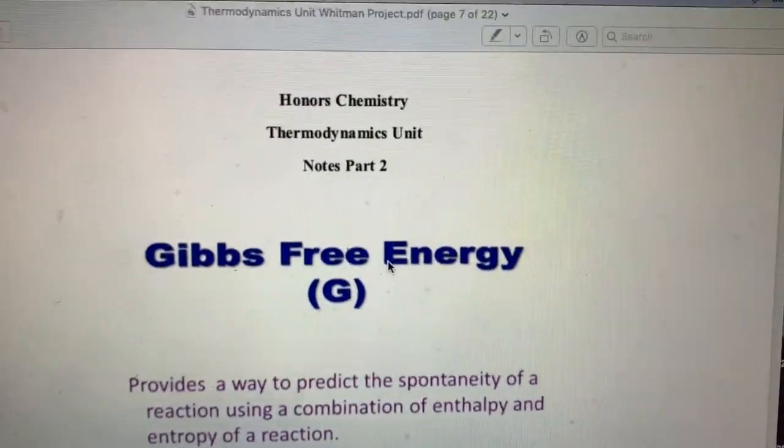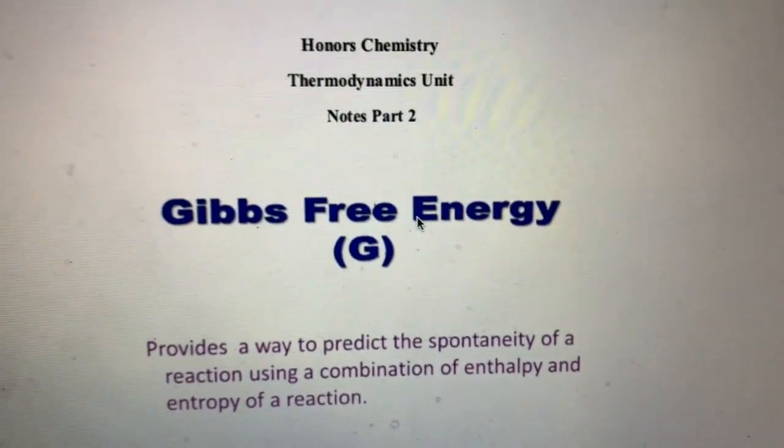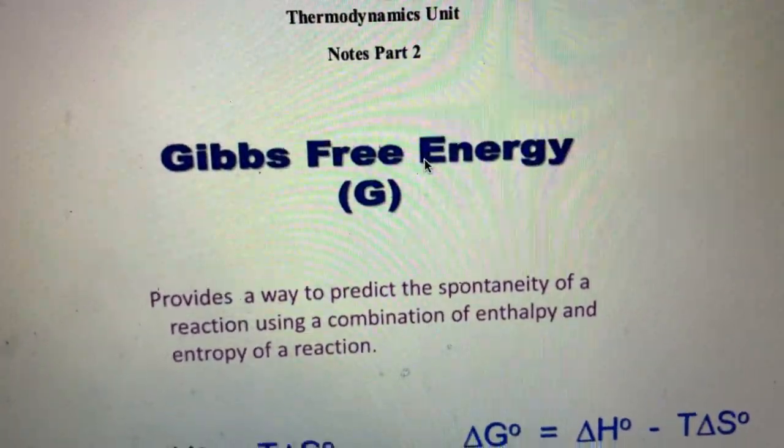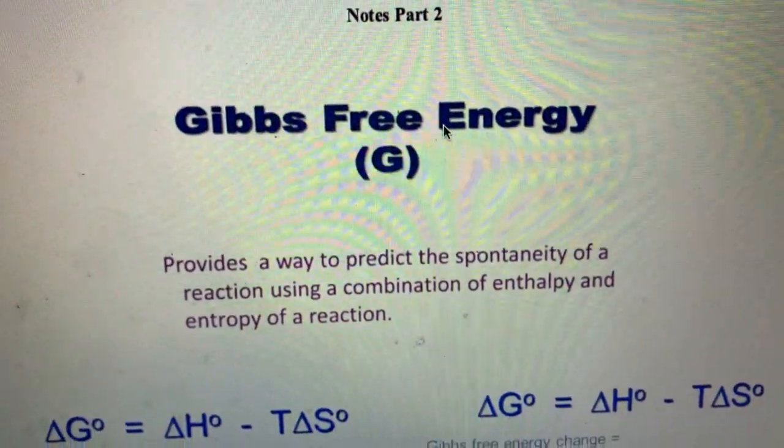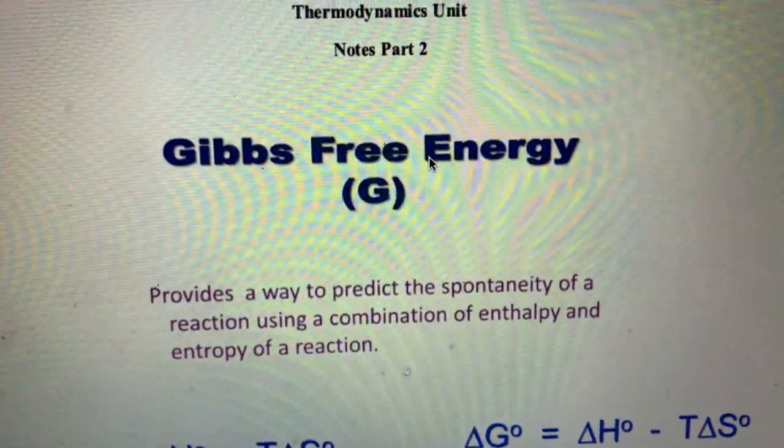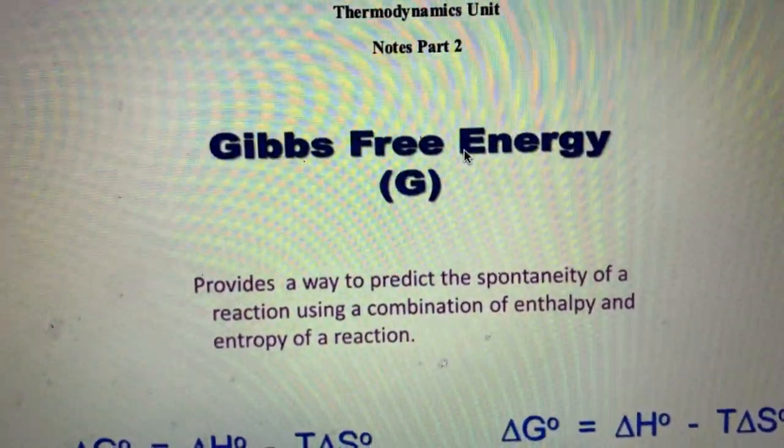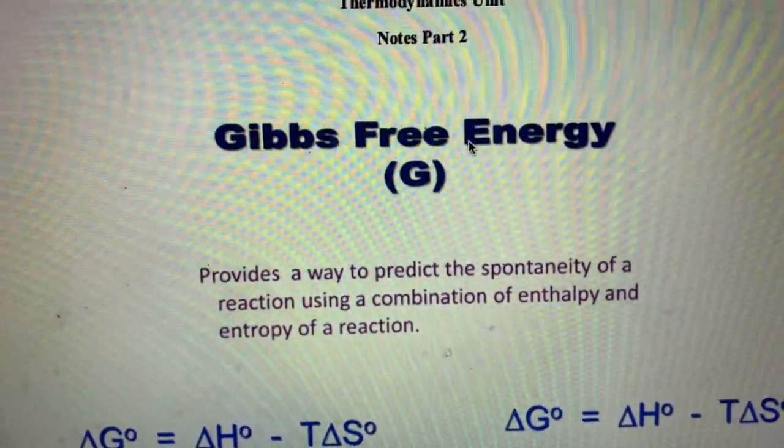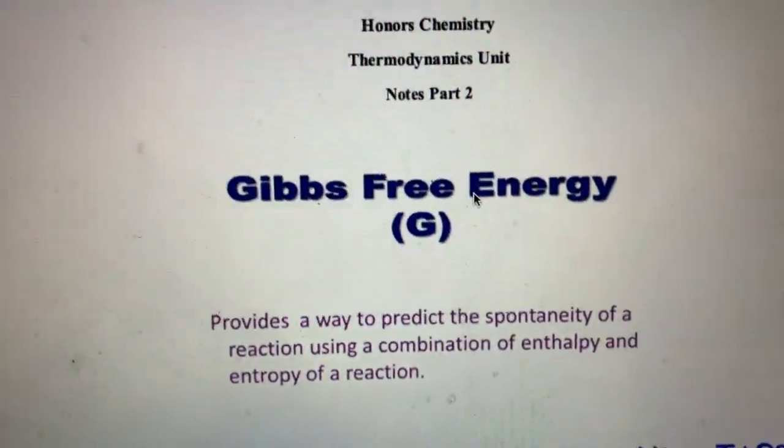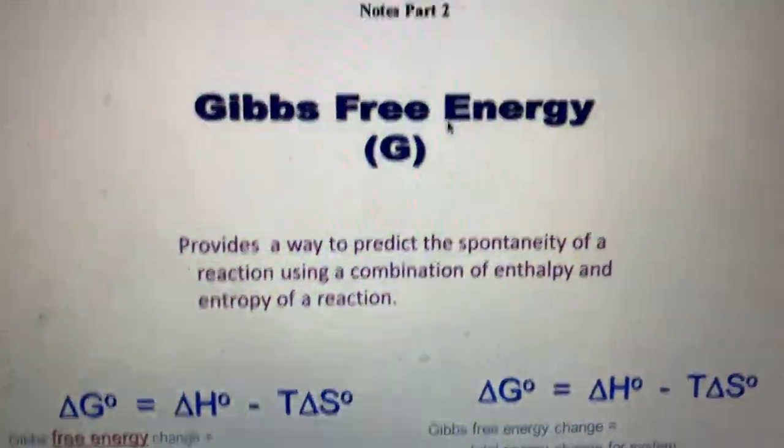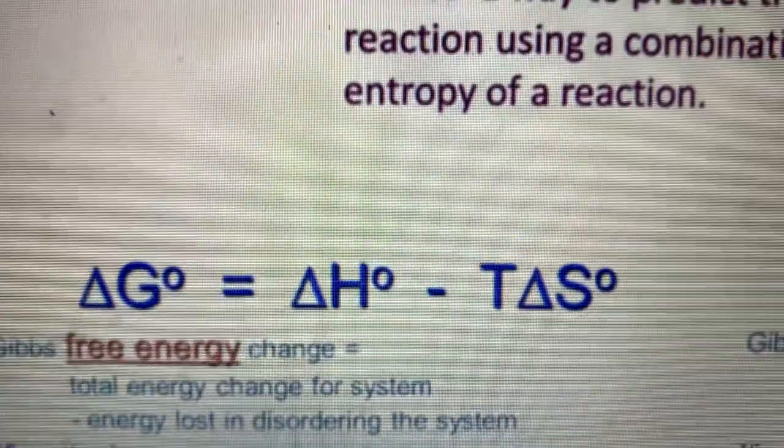Hi everybody and welcome to our second part of notes for our thermodynamics unit. Today we're going to talk about something called Gibbs free energy, known as delta G. Delta G is a nice little equation that we can use to determine whether or not a reaction is going to be spontaneous, whether it's going to occur without outside intervention.